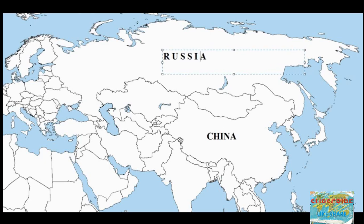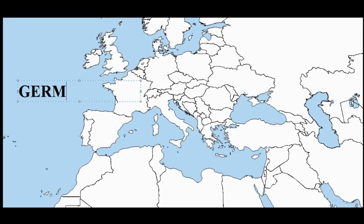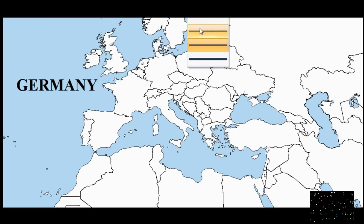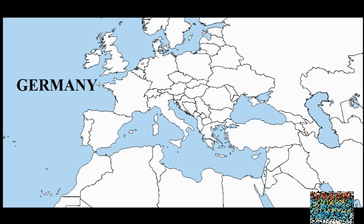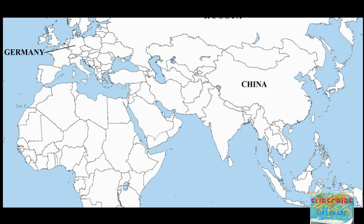China — just above India. Russia — above China, and it is the largest country of Asia as well as of the world. Germany — it is a European country, located in the south-east direction of the United Kingdom.